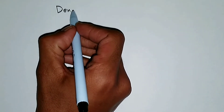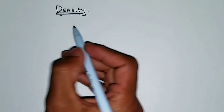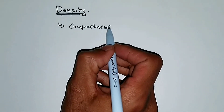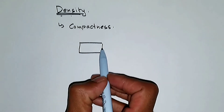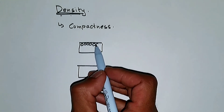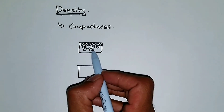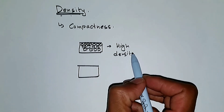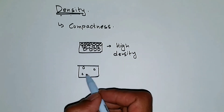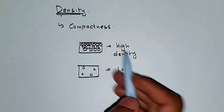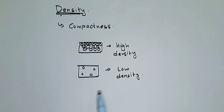Now upthrust is done. Let's look at density. Density is very simple — it's about how compact something is. So density is compactness. If the molecules in an object are very, very compact, then it means that body has high density. And if the molecules in a body are very, very loose, like in the case of air, it means it has low density.